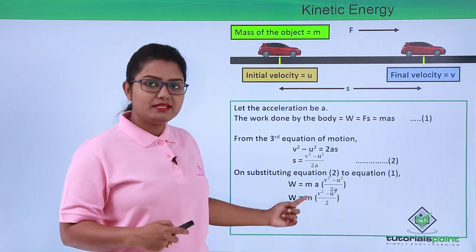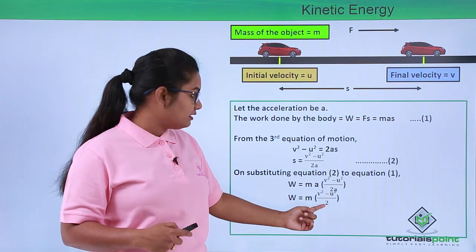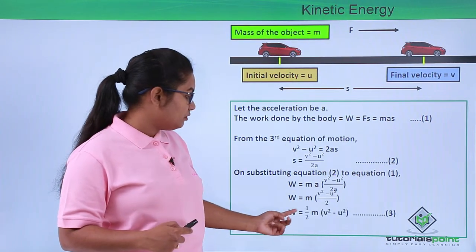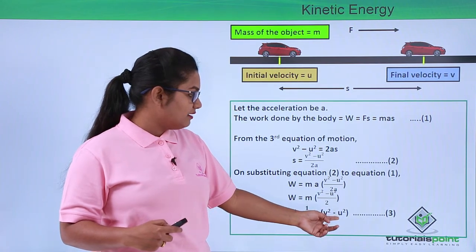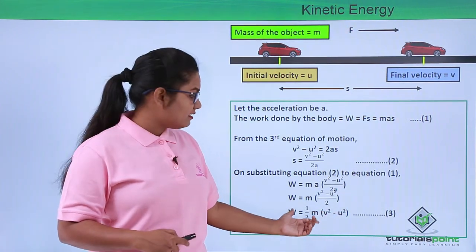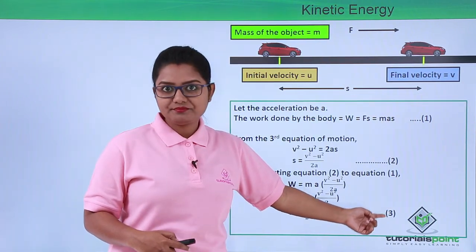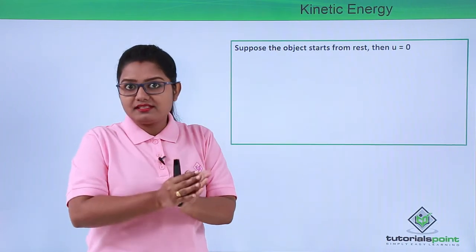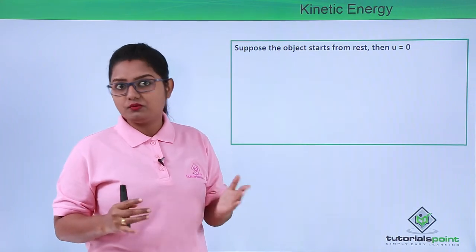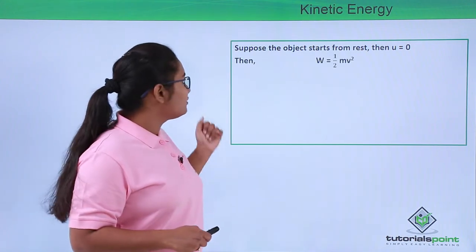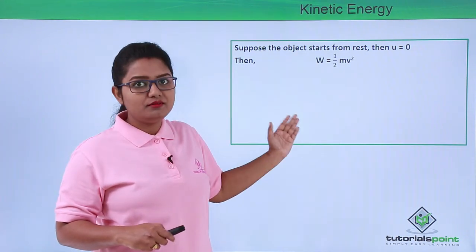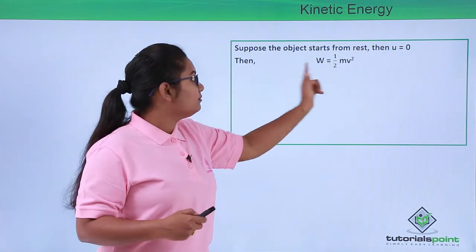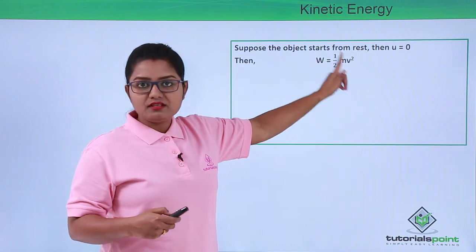On substituting equation 2 into equation 1, we have W = m × a × (v² − u²) / 2a. The acceleration in the numerator and denominator cancel each other, and we are left with W = m(v² − u²) / 2, which gives us W = ½m(v² − u²). This is equation number 3. Now suppose the object starts from rest, so its initial velocity u = 0. The term with u cancels out, and we are left with W = ½mv².